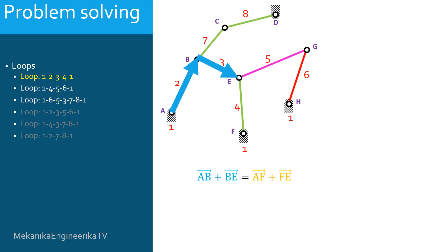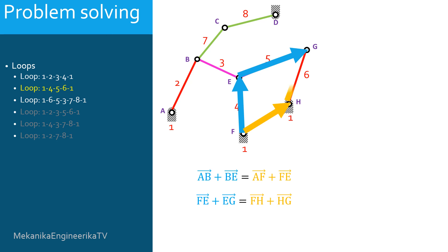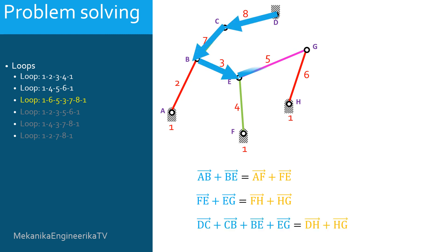Using the first loop, it is possible to write the position of E relative to A using 2 different paths. We will have AB plus BE equal to AF plus FE. Using the second loop, it is possible to write the position of G relative to F using 2 different paths. We will have FE plus EG equal to FH plus HG. Using the third loop, it is possible to write the position of G relative to D using 2 different paths. We will have DC plus CB plus BE plus EG equal to DH plus HG.